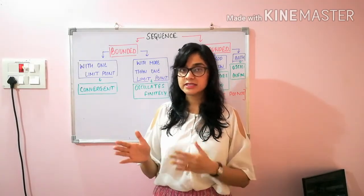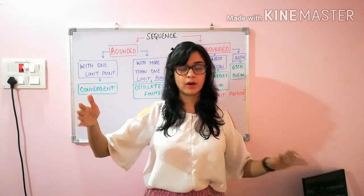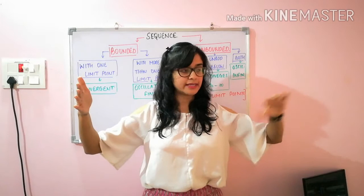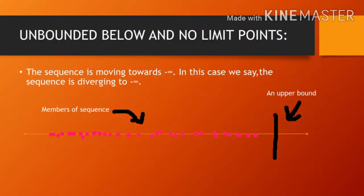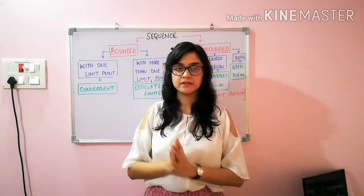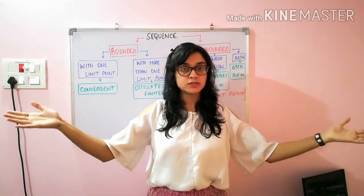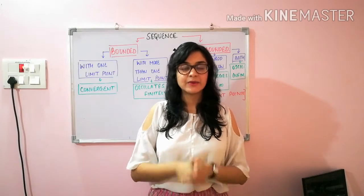Similarly, the second scenario: when your sequence does have an upper bound but does not have a lower bound — there is a big number providing a boundary in front, but the sequence is not bounded below — in this case we say that the sequence is diverging to minus infinity. Divergence has two kinds of criteria: if the sequence is not bounded above, it diverges to plus infinity; if the sequence is unbounded below, it diverges to minus infinity. Next, if there is no boundary on either side, the sequence is oscillatory infinitely.